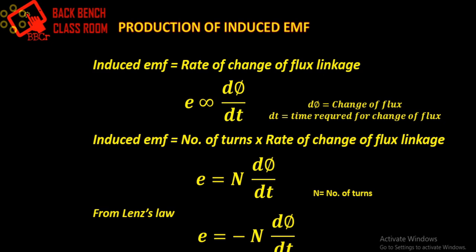This entire thing is explained here. The initial flux before being cut by the conductor is φ1 and initial time is t1. And after cutting the flux, the final flux is φ2 and the final time is t2.